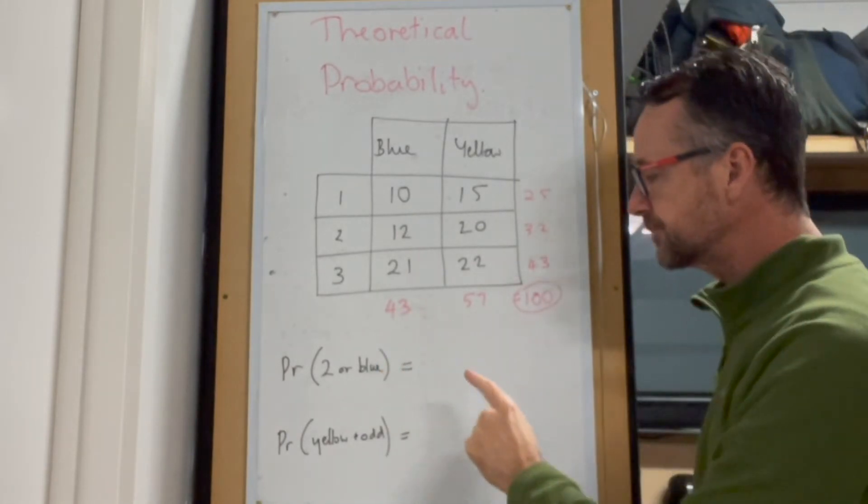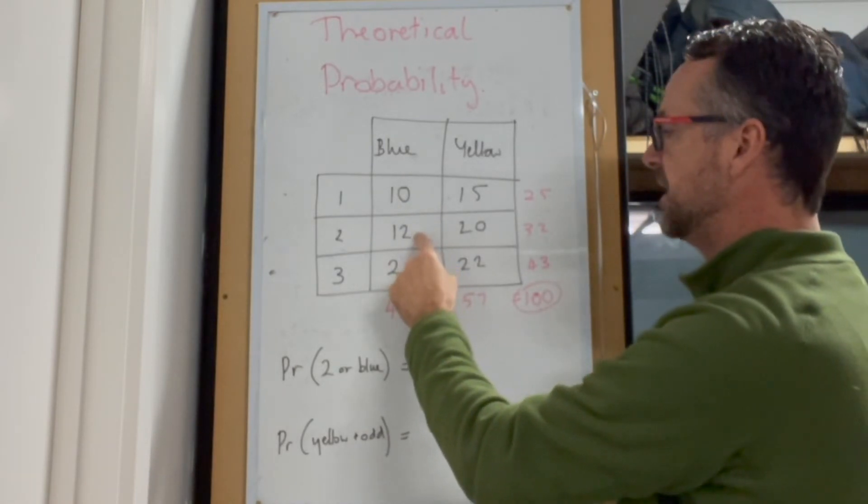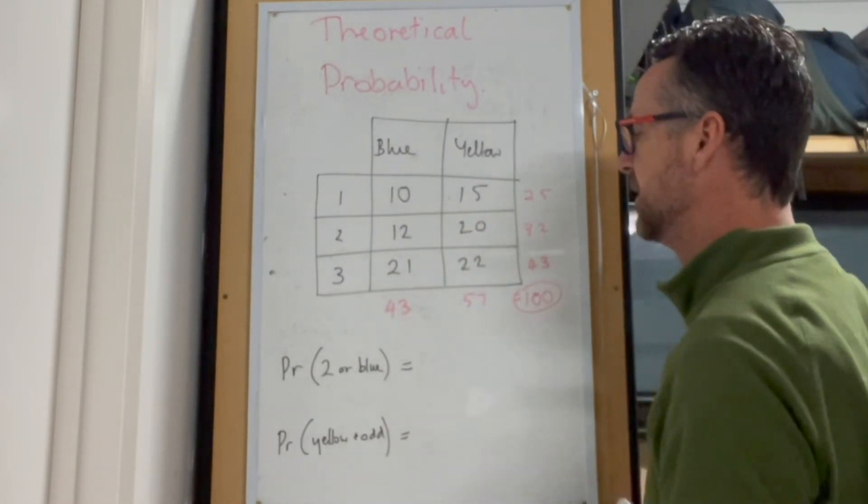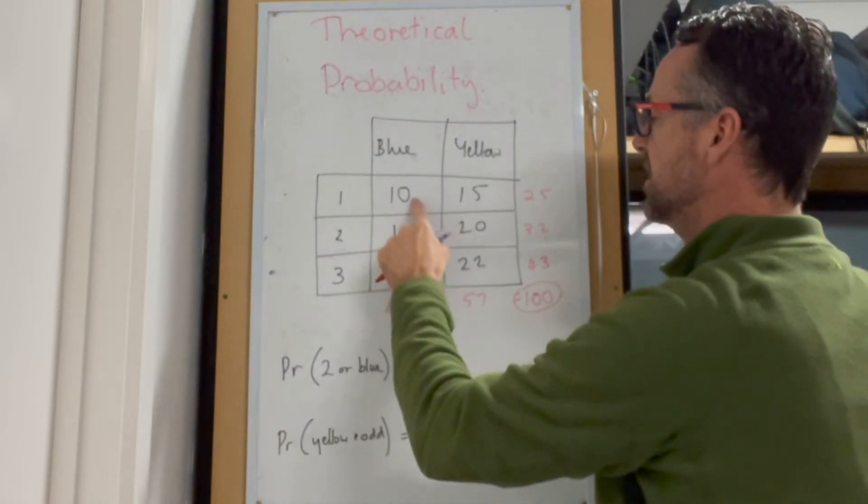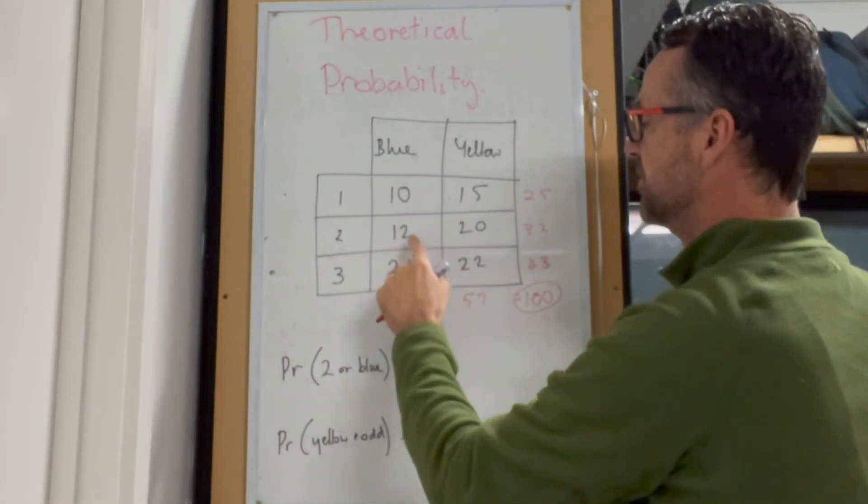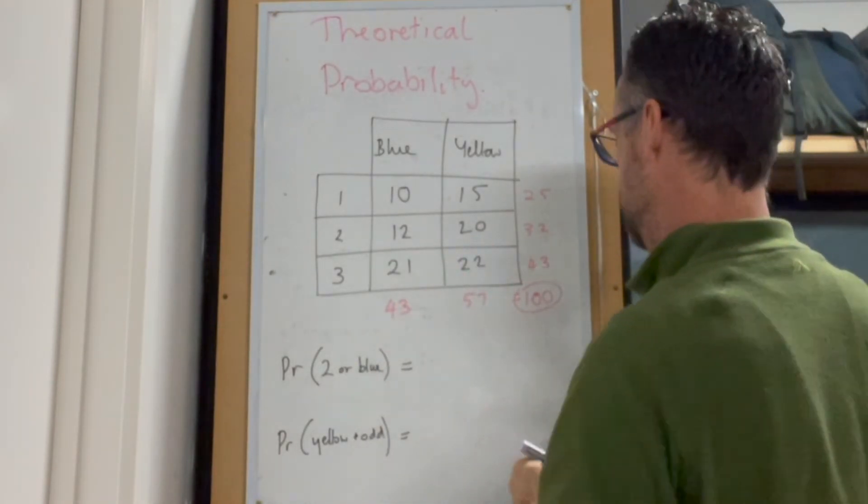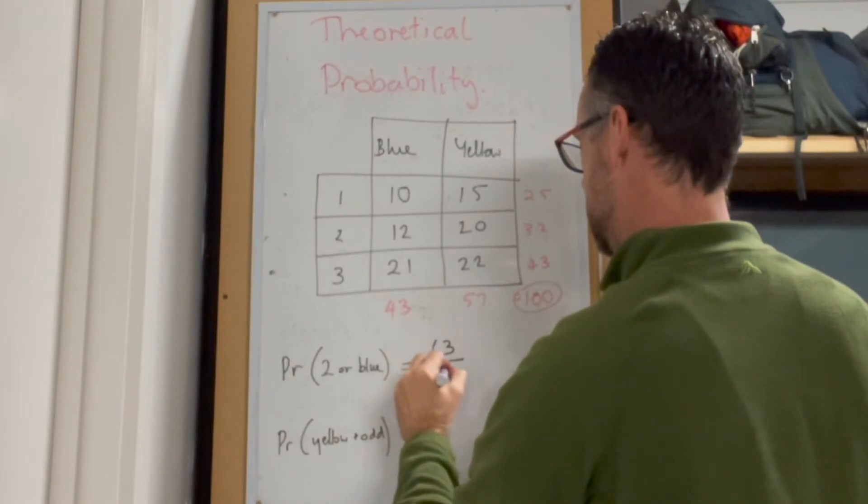Now, we can't count the 12 twice. So we need to make sure that we only count that 12 one time. So it's going to be 10 plus 12 plus 21 plus 20. So 10 plus 12 plus 20... 43 plus the 20 is 63 over 100.